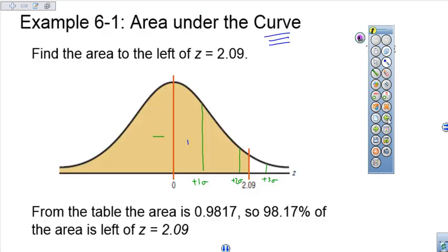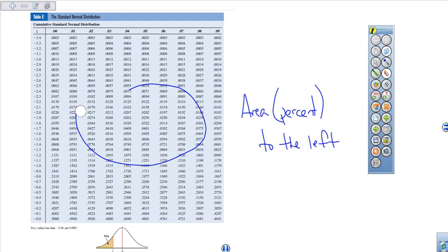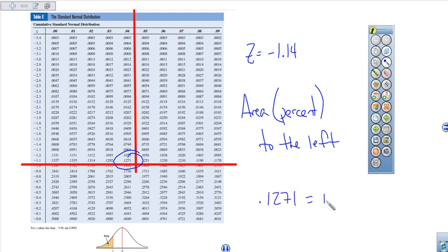So we come back to our table E. On my table E, I had a z-score of negative 1.14. So I grabbed my straight edge, whatever you want to use, negative 1.1, and put the 4 on the end. So my percentage is 0.1271, which is also known as 12.71%.